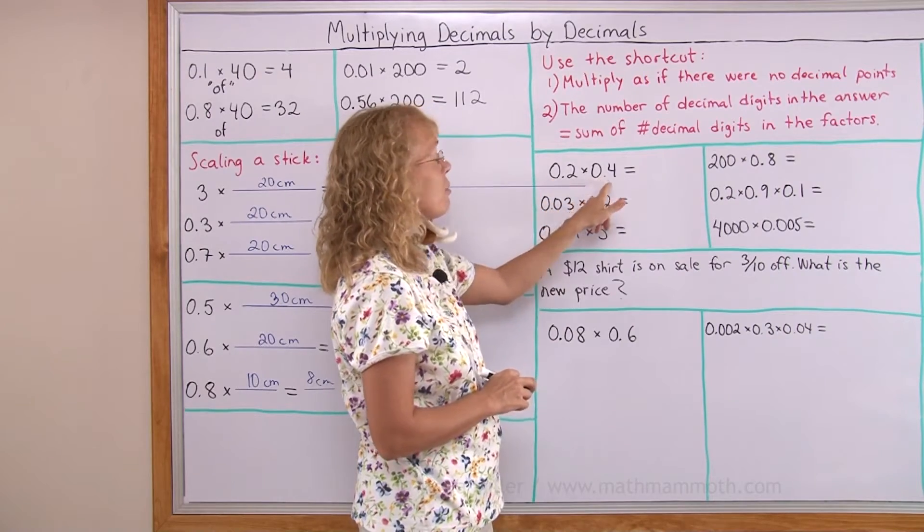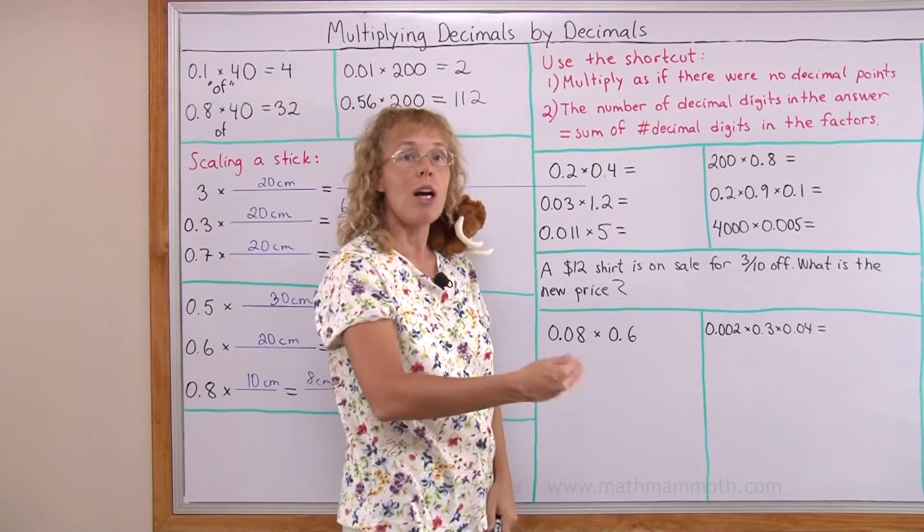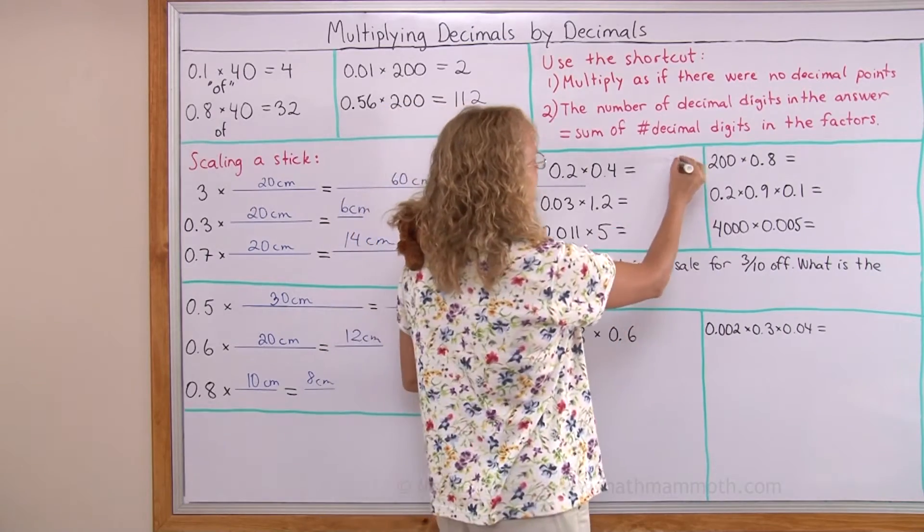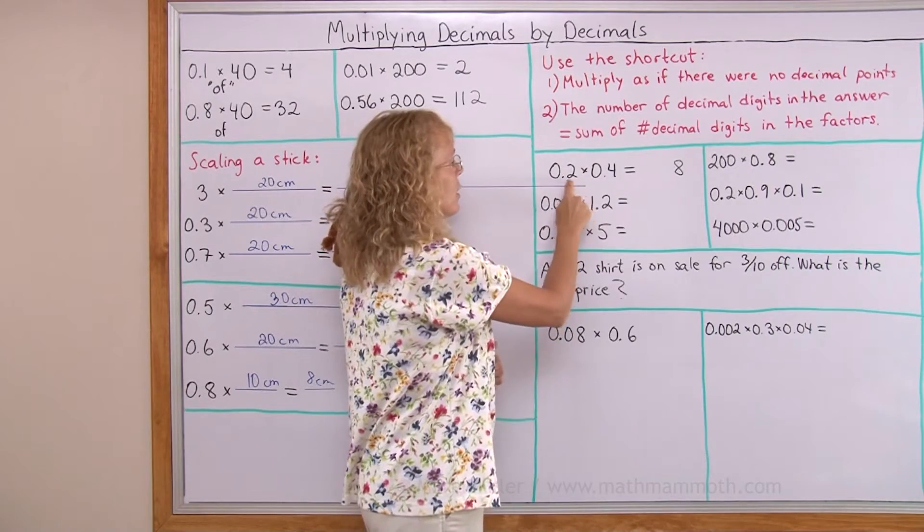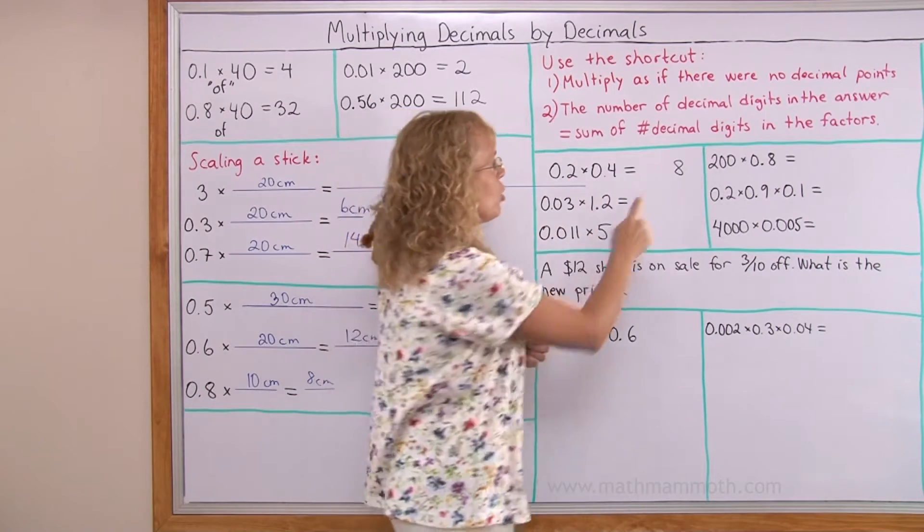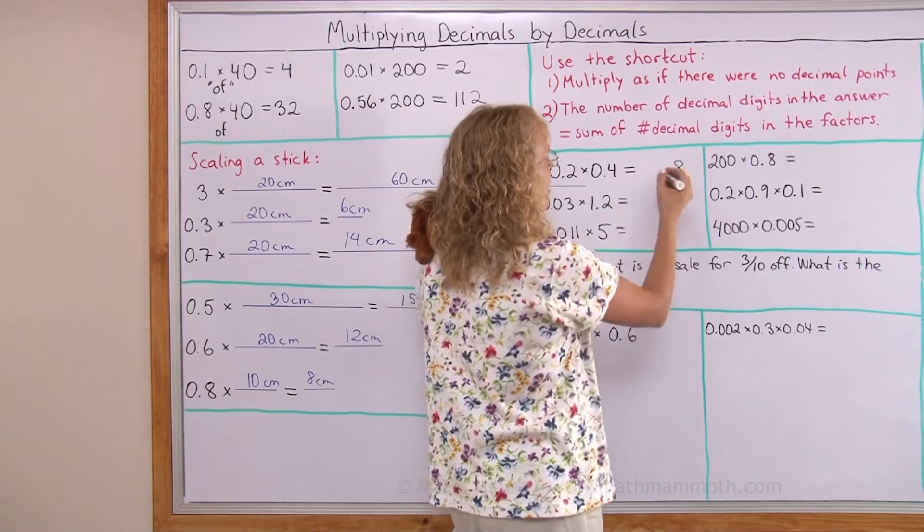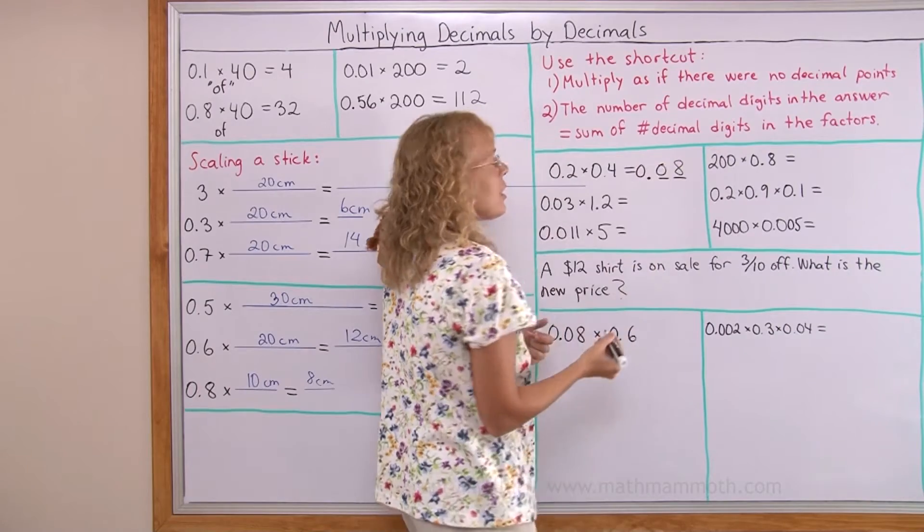Here I have two tenths times four tenths. So I multiply as if there were no decimal points. Two times four, eight. But then I count the decimal digits here. There's one decimal digit here and one here. So in total, a total of two. I need to have two decimal digits here. So it's gonna be like this. And then fill in with zeros.